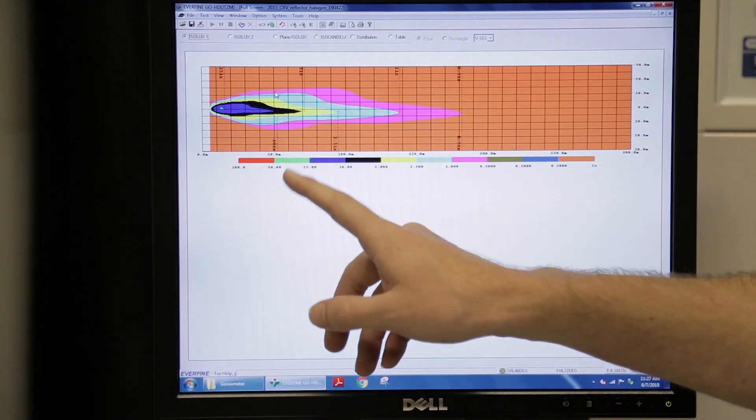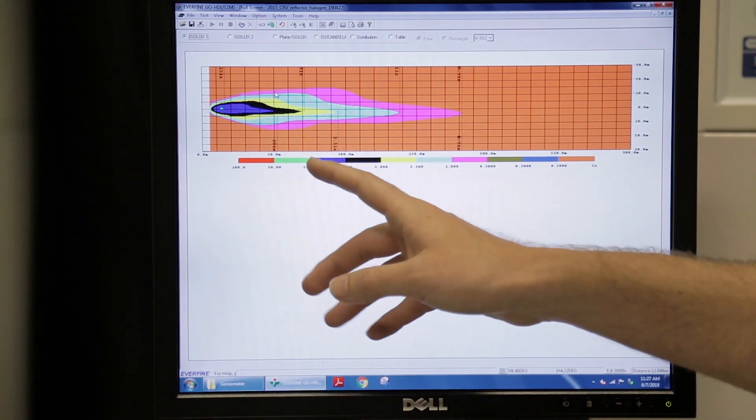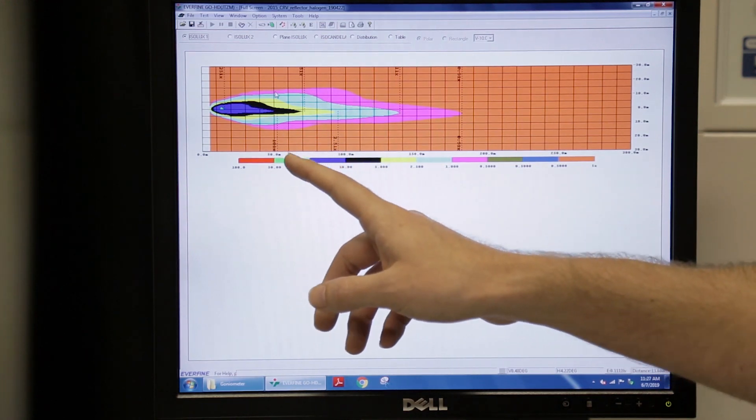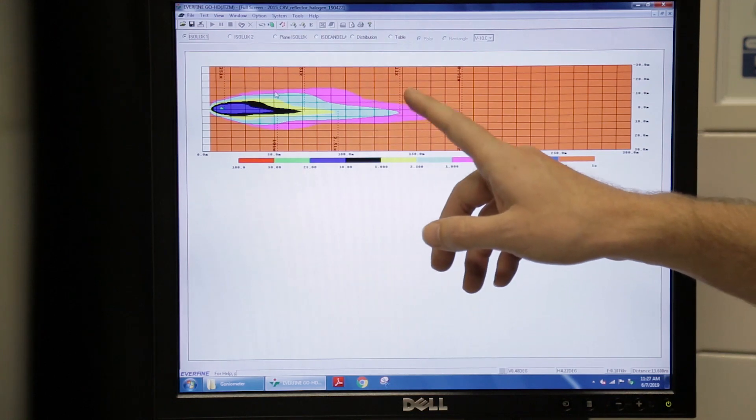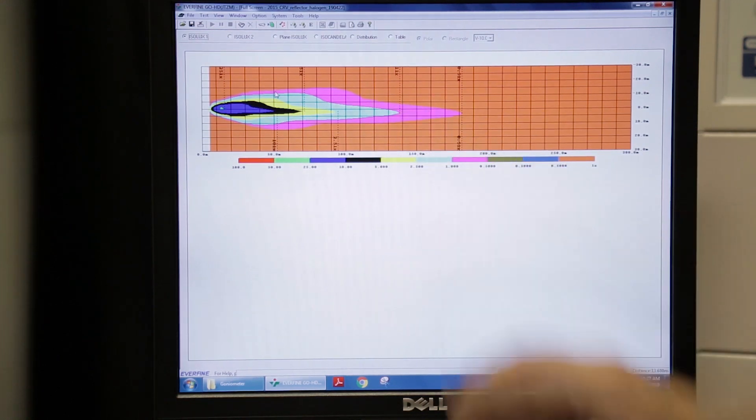So you might see this type of photo on our website and this isn't a Photoshop or anything this is a generated image from the real data and real measurement showing how far down the road you should be able to shine your light with your headlights.